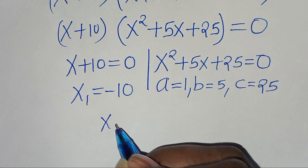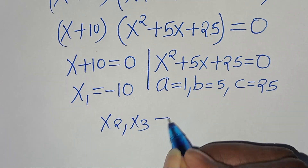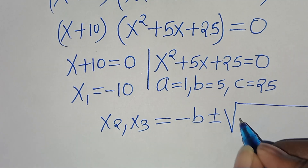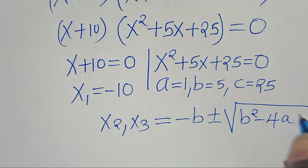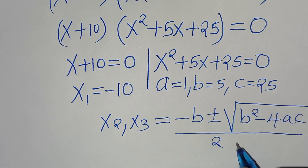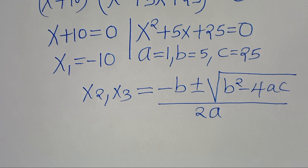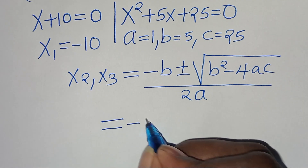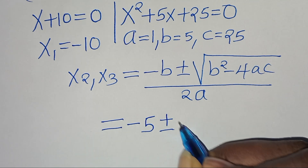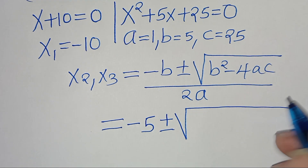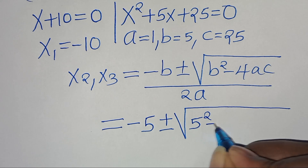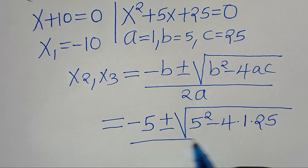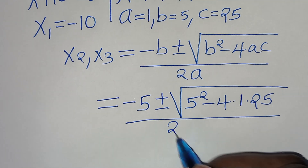We solve for x2 and x3 by applying the quadratic formula: minus b plus or minus the square root of b squared minus 4ac, all divided by 2a. Substituting, we have minus 5 plus or minus the square root of 5 squared minus 4 times 1 times 25, divided by 2 times 1.